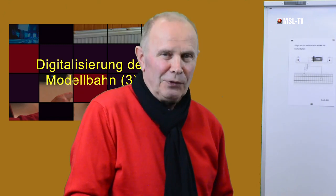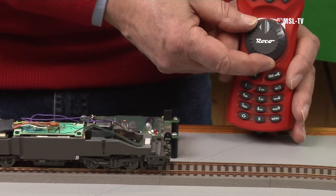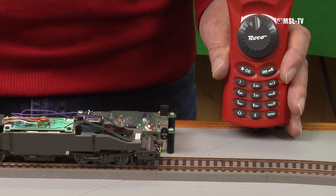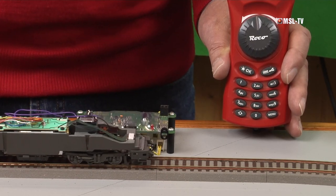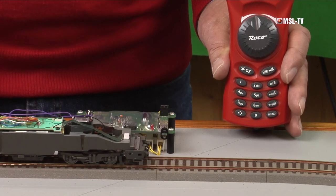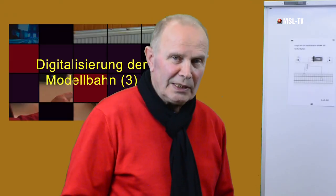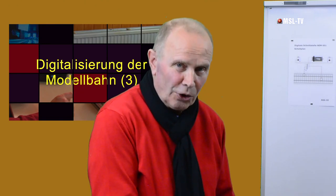Kommen wir zur CV 2 – die Anfahrgeschwindigkeit oder Kriechgeschwindigkeit. Das ist jene Geschwindigkeit, wenn ich den Regler nur ein wenig öffne. Wir sehen, die Lok bewegt sich langsam, aber sie fährt. Genau das ist die CV 2: Sie stellen vor, mit welcher Geschwindigkeit die Lok losfahren soll, wenn Sie den Regler gerade öffnen.